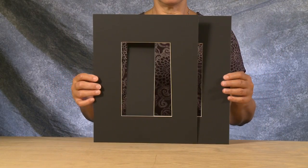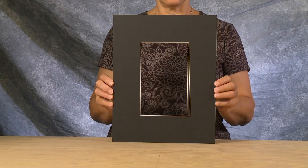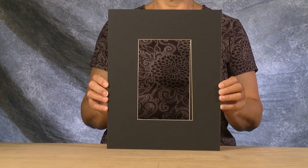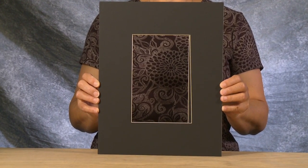If you find that the borders on the mats you are cutting are tapering from big to small, as shown in the example here, you may need to re-parallel the mat guide on your mat cutter.